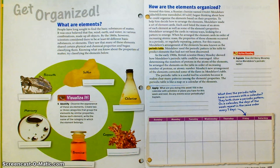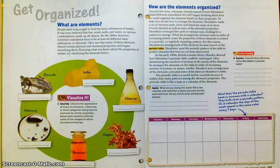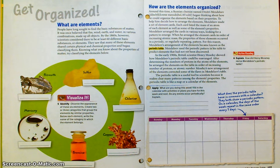The periodic table is a useful tool to scientists because it makes clear many patterns among the elements' properties. The periodic table is like a map or a calendar of the elements. The word 'periodic' just means something that occurs repeatedly or at predictable intervals. Mendeleev's table was arranged by atomic mass, but Moseley arranged the periodic table by atomic number, which reordered a few elements and fixed a couple of problems.